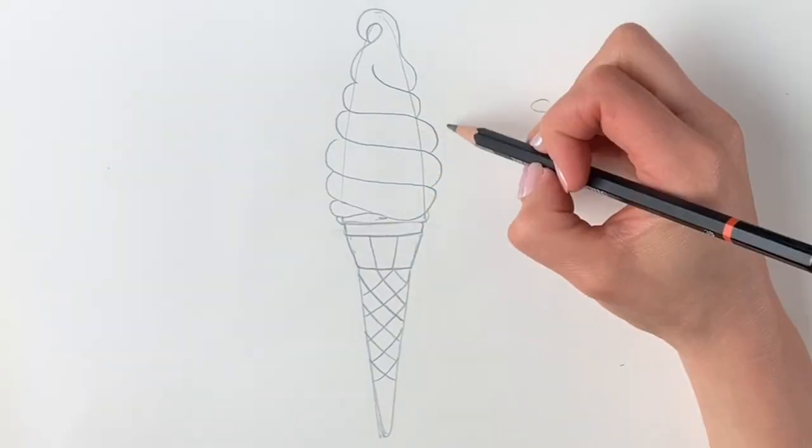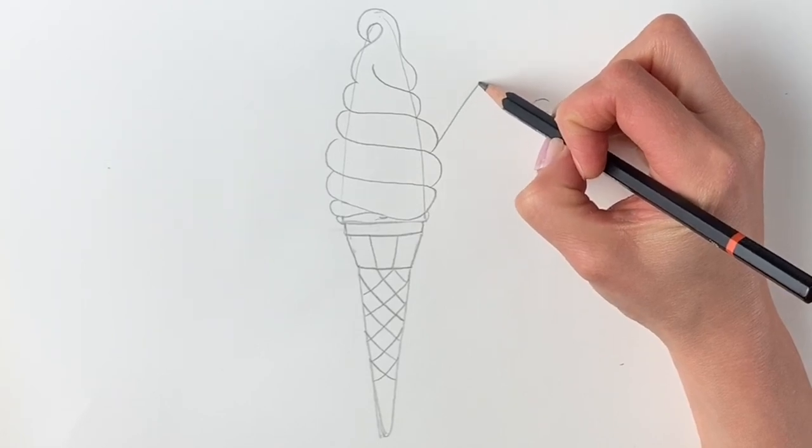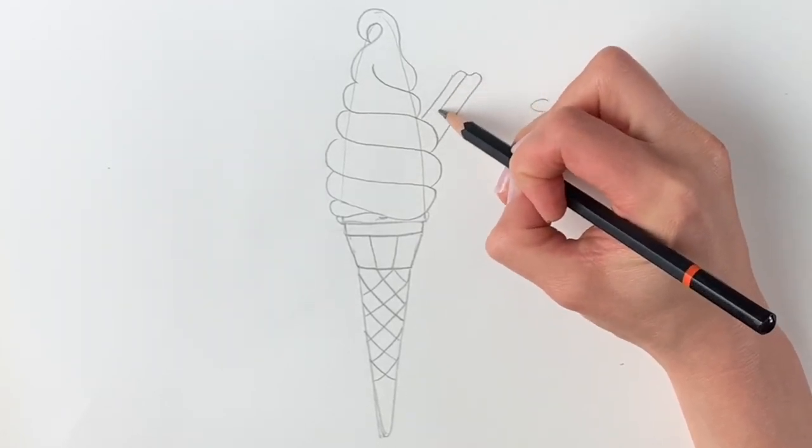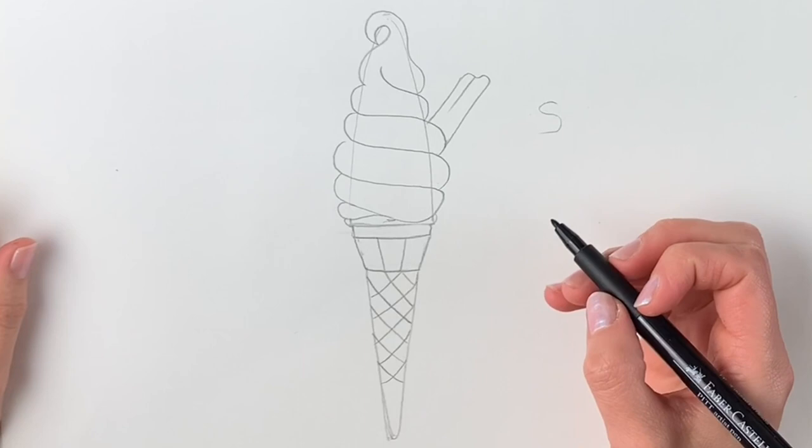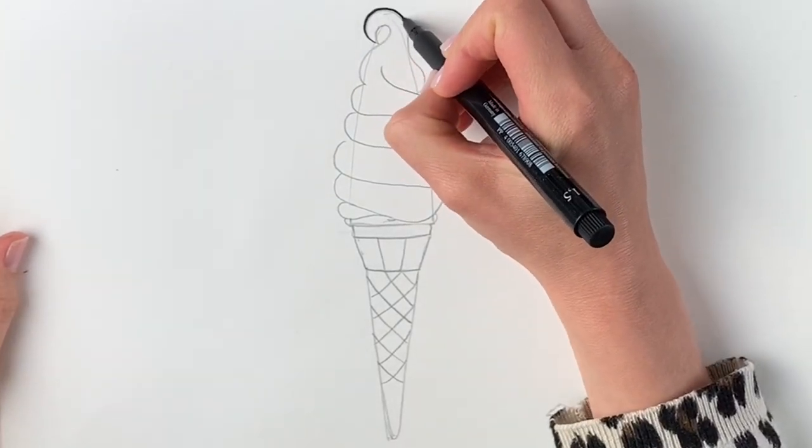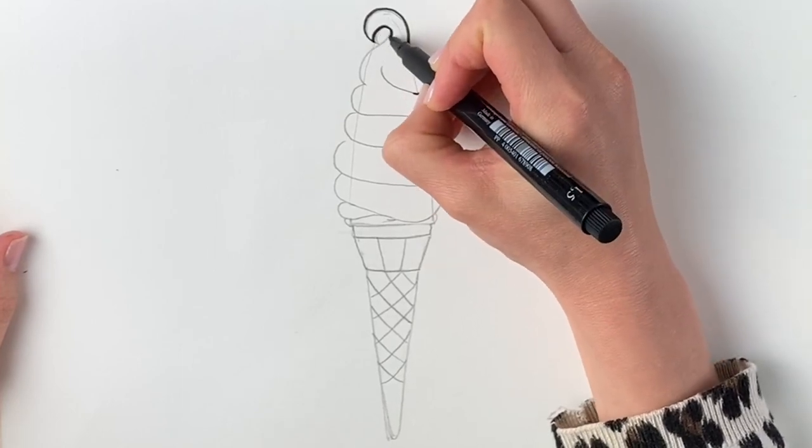Last but not least, we're going to be adding the flake, my favorite part. That comes out here, and then we've just got this crumbly flake stuck in like this. Now it's time to go over it in pen. We're going to start at the top and just go over our pencil drawing in pen to make it really stand out.